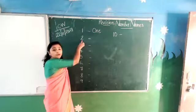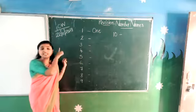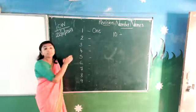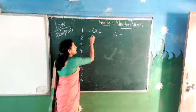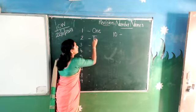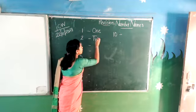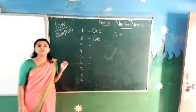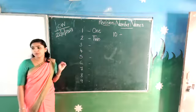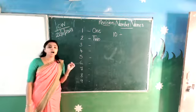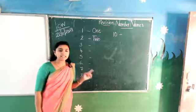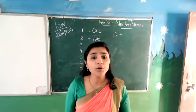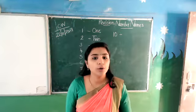Number 2. What is the spelling of number 2? T-W-O — 2. The spelling of 2 is T-W-O.